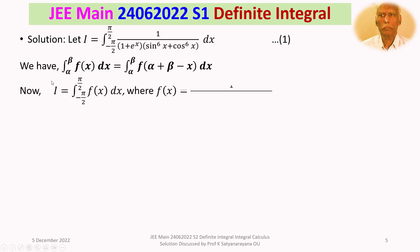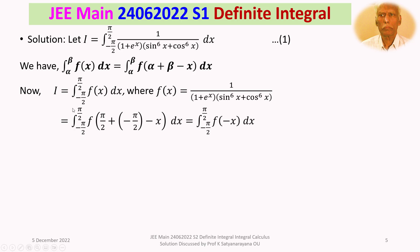I equals the integral from −π/2 to +π/2 of f(x) dx, where f(x) is 1 divided by (1 + eˣ)(sin⁶x + cos⁶x). Applying the formula, wherever there is x we write α + β − x, which in our case is π/2 + (−π/2) − x. The π/2 terms cancel and we get f(−x).